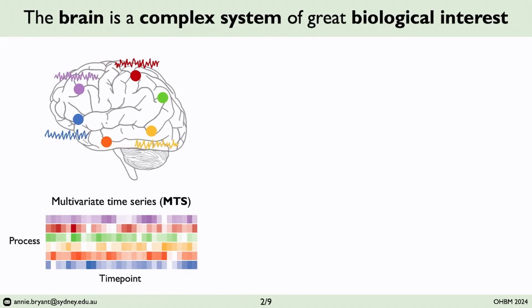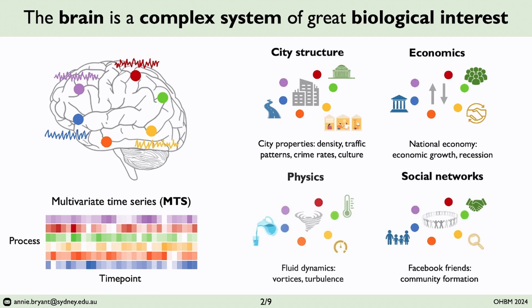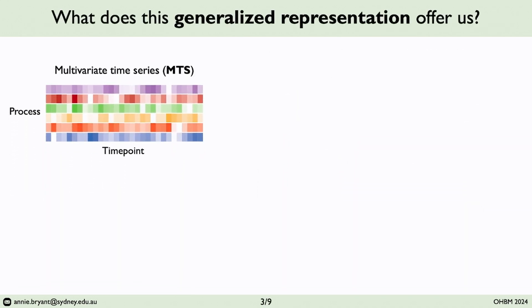We can broaden our scope to put the brain in the context of a complex system, which is a system with individual components — be it neurons or brain regions — that each exhibit their own local dynamics, and yet collectively give rise to emergent behaviors, often interacting in a nonlinear manner. There are myriad examples of complex systems across disciplines, from city structure, economics, physics with fluid dynamics, and social networks like Facebook friend community formation. I bring up these cross-domain examples to underscore how we can benefit from interdisciplinary methods to better understand brain activity at multiple scales and in multiple contexts.